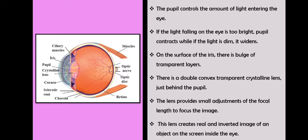The convex lens creates a real and inverted image of an object on a screen inside the eye. For the image to be seen, you need a clean surface where the image can form.